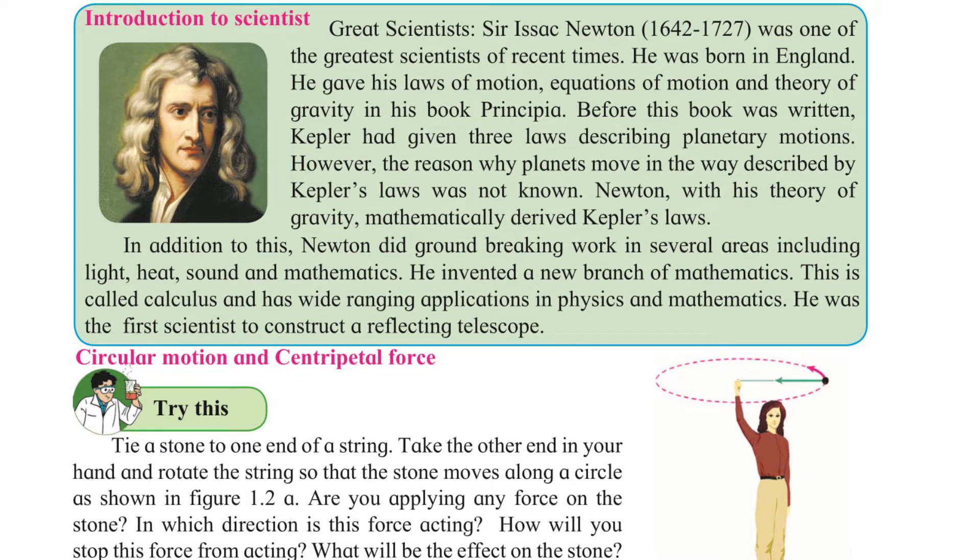In addition, Newton did groundbreaking work in several areas including light, heat, sound, and mathematics. He invented a new branch of mathematics called calculus, which has wide-ranging applications in physics and mathematics. He was the first scientist to construct a reflecting telescope.